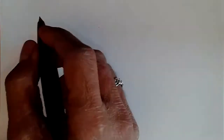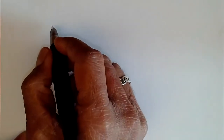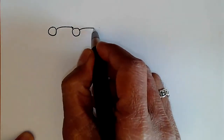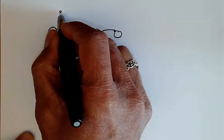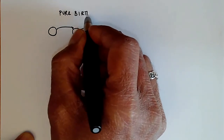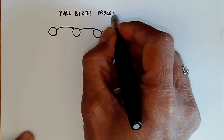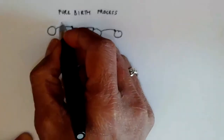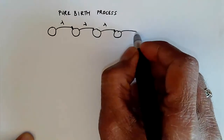Let's consider a birth-death process which has the property that there are no deaths at all. So we have a state and then the transition rate under the state and so on. There are no deaths, just births, and we call this a pure birth process. We consider a specific kind of pure birth process where the transition rate is independent of the state, so we always have a transition rate of lambda as we go from one state to another.